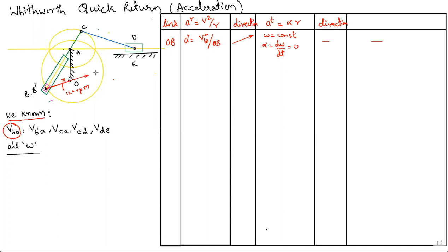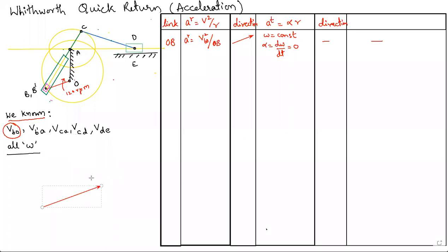Now draw the radial acceleration of the crank on the main acceleration diagram. The direction is shown as a line, and the fixed points O, A, and E are all at the same point on this diagram.